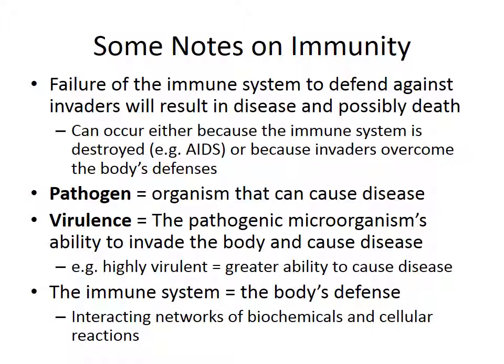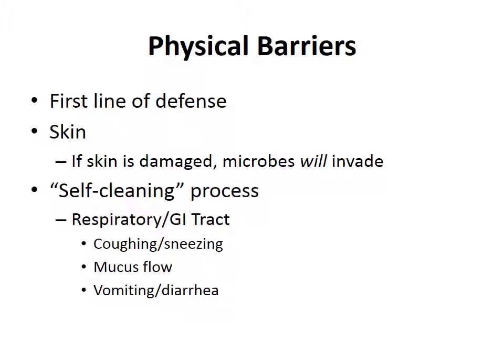A couple of definitions: a pathogen is any organism that can cause disease. Virulence is a pathogenic microorganism's ability to invade the body and cause disease — a highly virulent pathogen is more able to cause disease. The immune system is the body's defense, involving interacting networks of biochemicals and cellular reactions. We'll focus on the cells and how they work and respond.